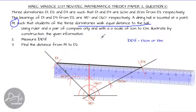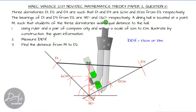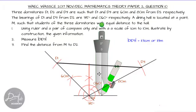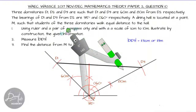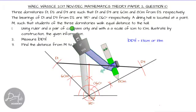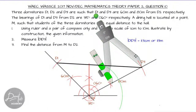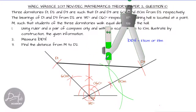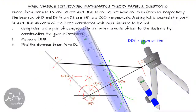To locate point M, which is equidistant from all three dormitories, we find the perpendicular bisectors of the sides of this triangle. Wherever the three perpendicular bisectors intersect gives us point M. Starting with line D2D3, we find the perpendicular bisector by drawing an arc from each endpoint using the same radius. Where these arcs intersect, we join with a straight line — that is the perpendicular bisector of D2D3.